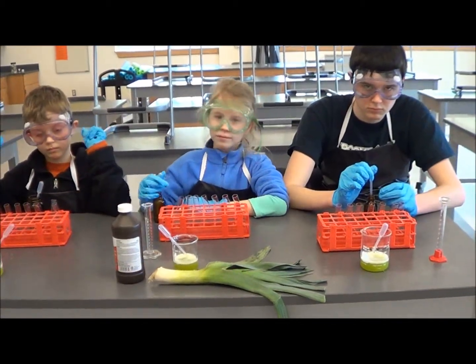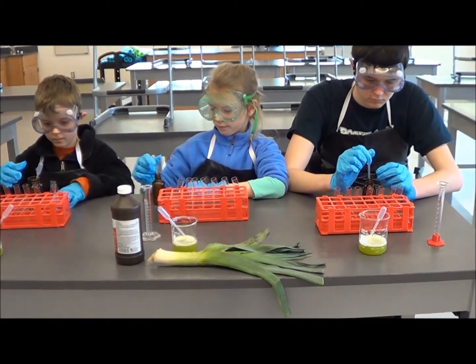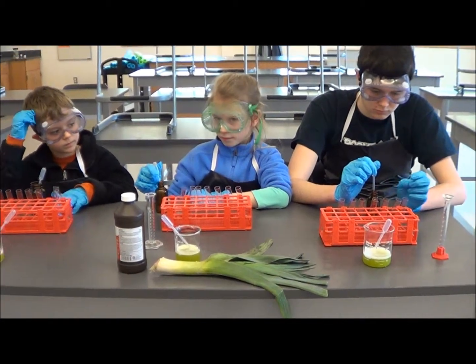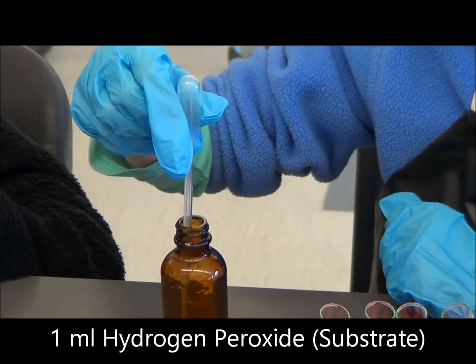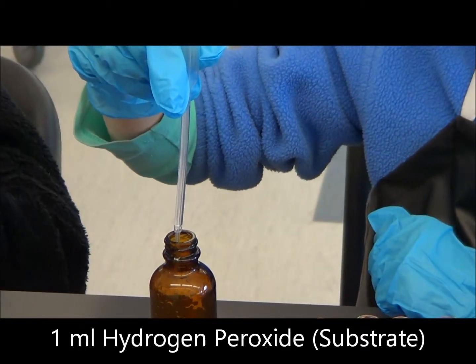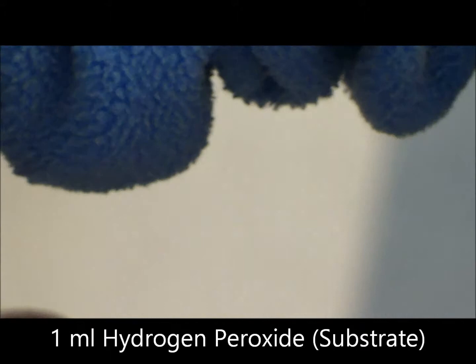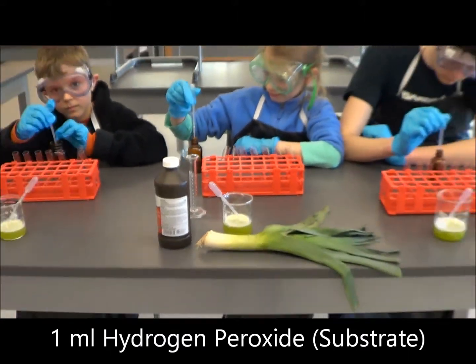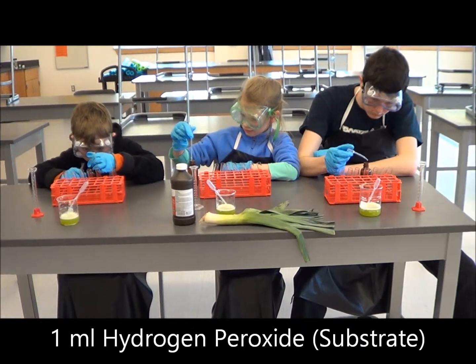Now what we're going to do is put one milliliter of hydrogen peroxide in every single test tube. We're going to demonstrate that. Squeeze the pipette - what line do you put it up to? Go ahead everybody, one milliliter in each of your seven test tubes.